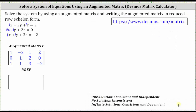Let's go ahead and write this down. Now to find the solution, we simply write the equations represented by each row in the augmented matrix in reduced row echelon form. The first row represents the equation one x equals negative three, or just x equals negative three. The second row represents one y equals negative two, or just y equals negative two. The third row represents one z equals one, or just z equals one.